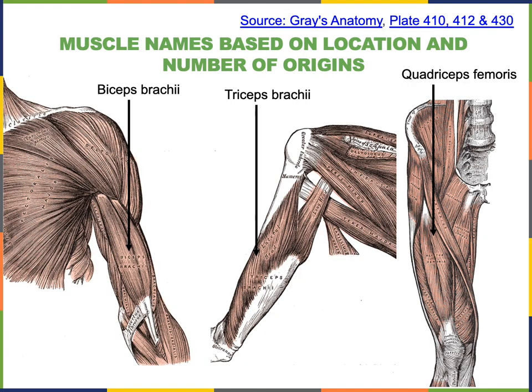Another way that muscles are named is based on location and number of origins. Biceps brachii has two origins — biceps literally translates to two heads — specifically the short head and the long head. Similarly, triceps brachii has three different origins. Both biceps brachii and triceps brachii get the ending word brachii referring to the brachial region. Quadriceps femoris has four origins and is located on the anterior of the femoral region.